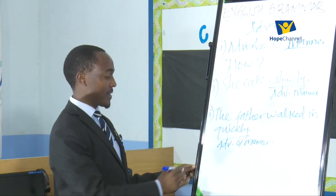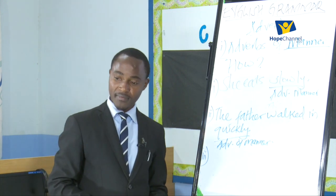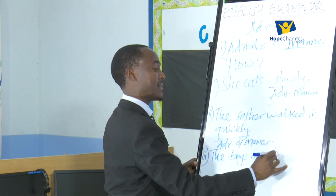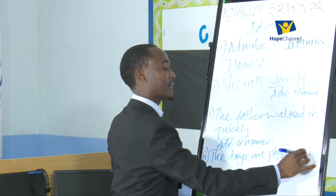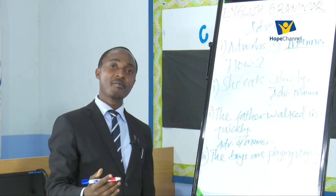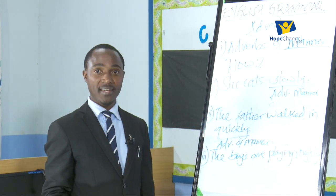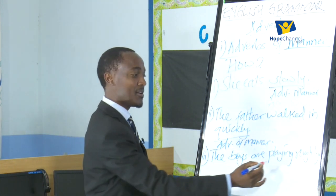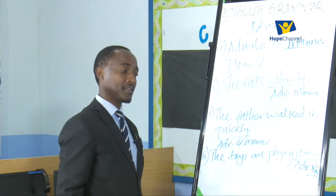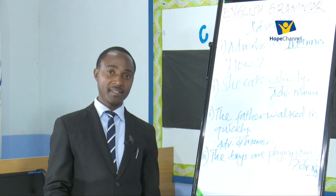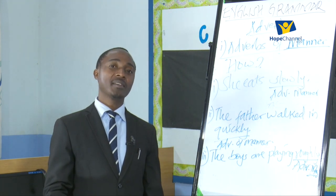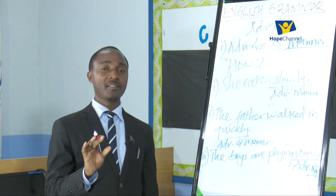Another example: 'The boys are playing roughly.' How are the boys playing? Roughly. So 'roughly' is our adverb of manner. Adverbs of manner tell us how an action takes place — ask 'how did the action take place, how is it taking place, or how will it take place?' and you will have your adverb of manner.